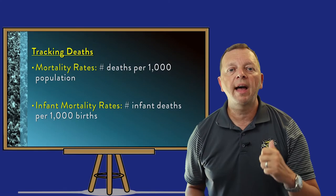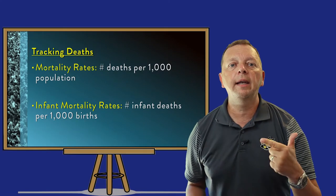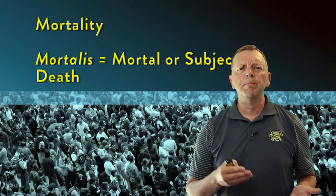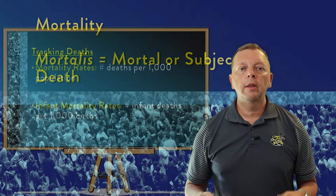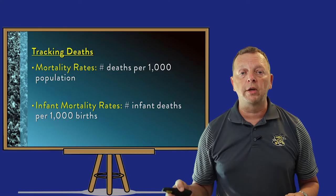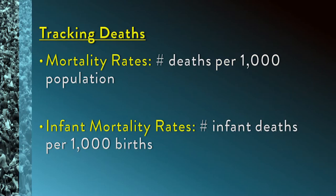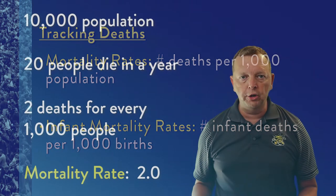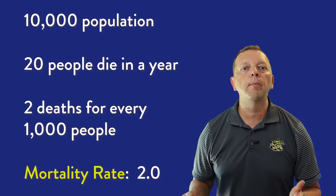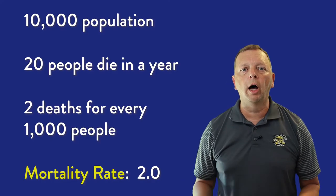We have something called a mortality rate and an infant mortality rate. Both terms contain the word 'mortality,' which comes from 'mortalis,' meaning mortal or subject to death. A mortality rate is essentially the opposite of a birth rate: where a birth rate tells us the number of births per 1,000 population, mortality rate is the number of deaths per 1,000 population. Unlike birth rates and fertility rates, we don't see as great a difference between poor countries and rich countries when it comes to mortality rates.